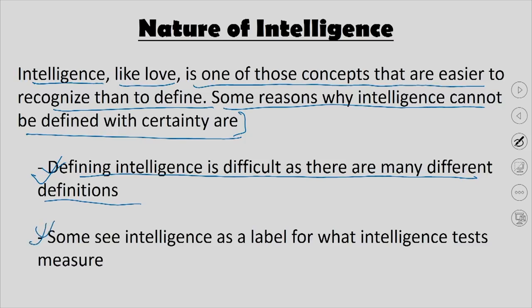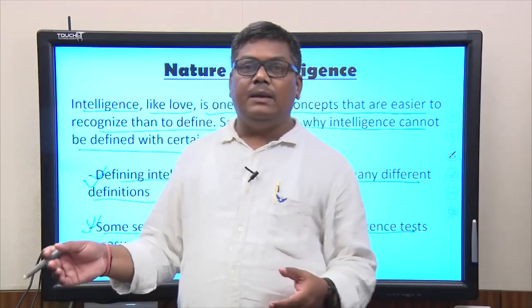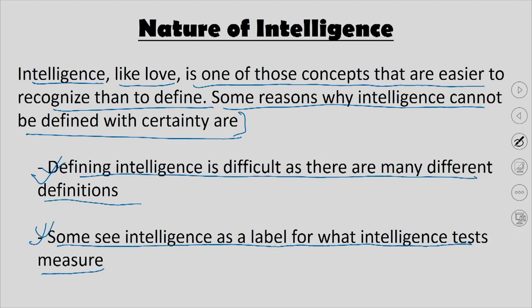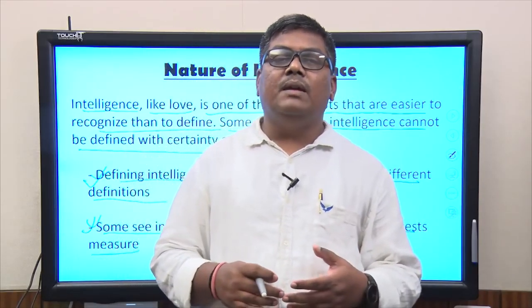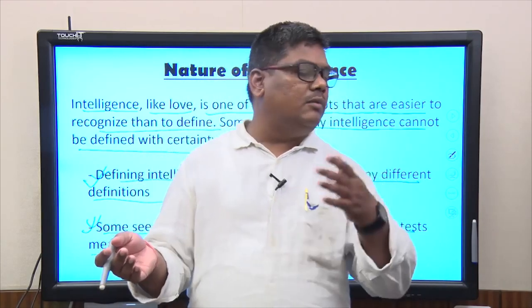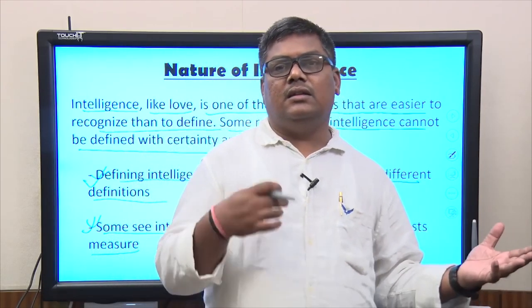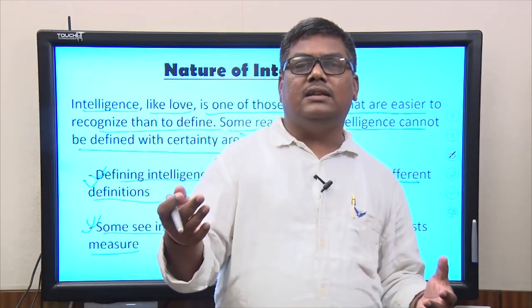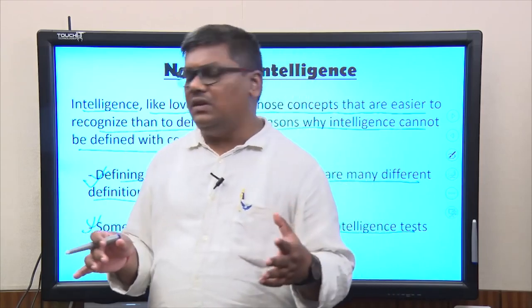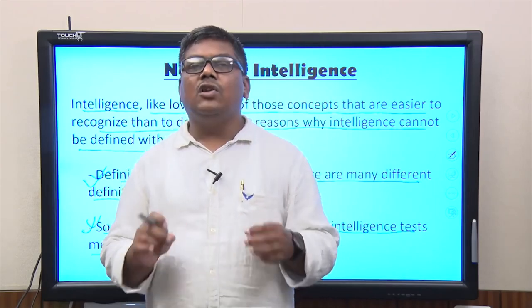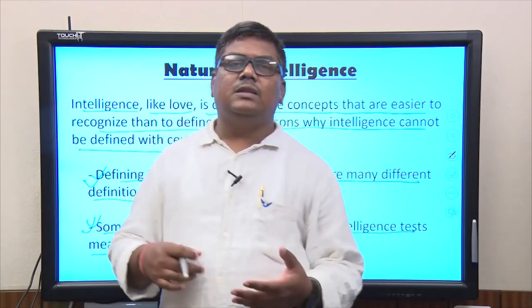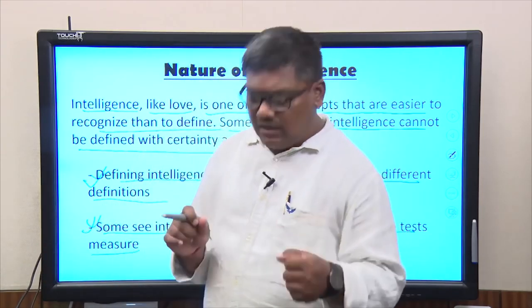A second reason intelligence is hard to define is that some see intelligence as simply what intelligence tests measure. But intelligence tests do not measure the whole of intelligence — people may be intelligent in academics but poor in social skills, or intelligent creatively but not academically. There are academic intelligence tests, emotional intelligence tests, spiritual intelligence tests, and so on. If intelligence is defined by what tests measure, the definition is incomplete.